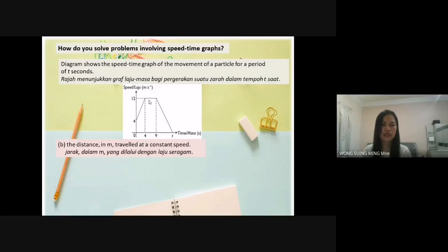For distance on a speed-time graph, we use area under the graph to find it. So, 9 minus 4 equals 5, 5 times 12. You will get 60 meters.